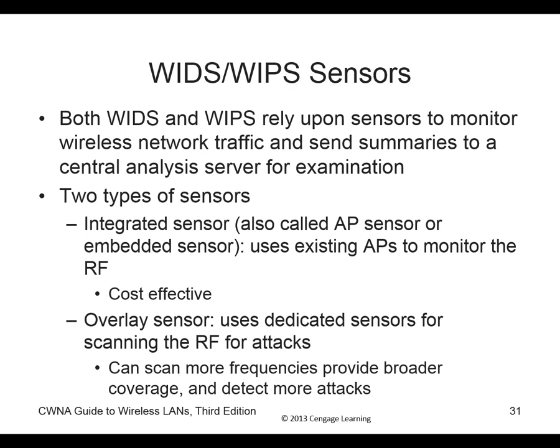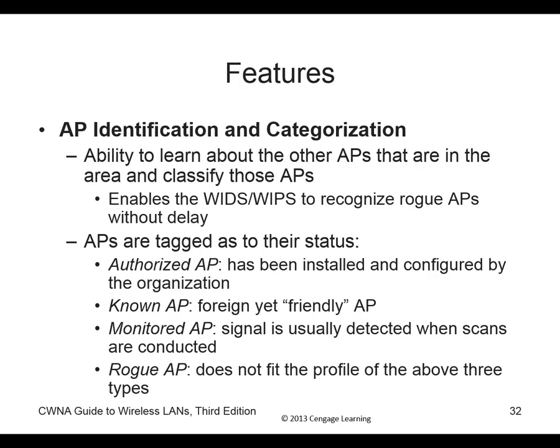WIDS monitors traffic entering and leaving a firewall, reporting to a central device — it's considered an inline device. WIPS can be embedded in your WAP to prevent traffic from even reaching the network. It uses overlay sensors that scan RF for attacks. Access point identification and categorization allows the IDS/IPS to classify APs and find rogue access points. There are four categories: authorized, known (friendly — won't be attacked), monitored (watching behavior), and rogue (blocked, attacked — not allowed to connect to the network).